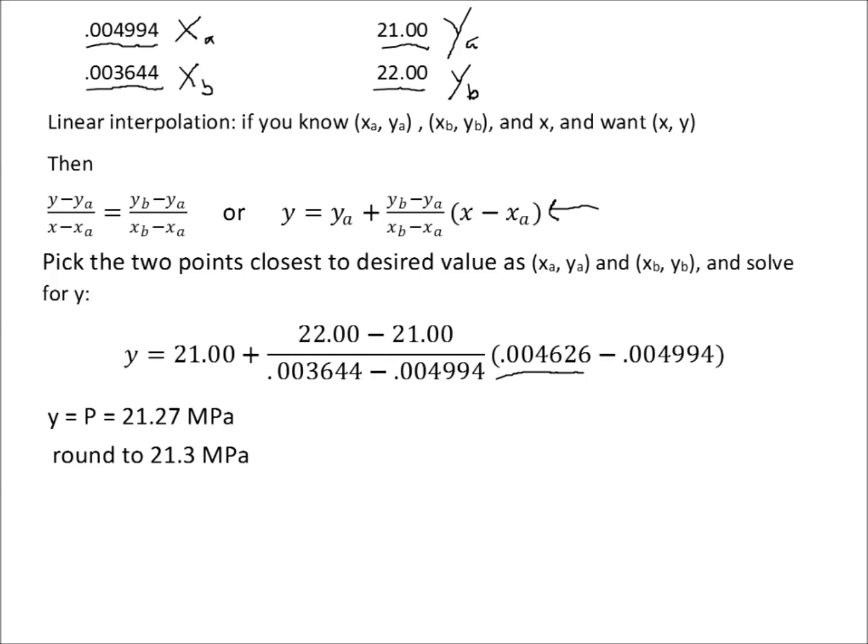This is only an approximation to the correct answer since we don't know the exact relationship between pressure and specific volume from the table. But if we look it up in a more comprehensive table, we find that the experimentally measured value of the saturation pressure of water at 0.04626 cubic meters per kilogram is 21.37 megapascals. So our answer from linear interpolation was pretty close. It's off by less than a tenth of a megapascal out of more than 20 megapascals. Linear interpolation will give you a good approximation of the answer.